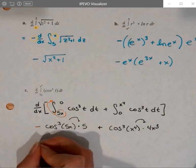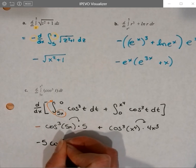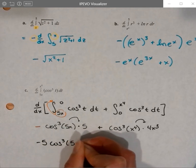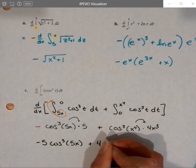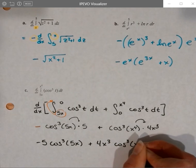So a tiny bit of simplification, if you want, that's negative 5 cosine cubed of 5x plus 4x to the 3rd times cosine cubed of x to the 4th.